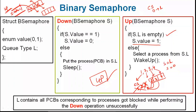Process 4 executes the critical section and completes. When it runs the up operation, we check the queue condition — all processes have come out of the queue, meaning the queue is now empty. Because the queue is empty, the semaphore value is set back to 1.